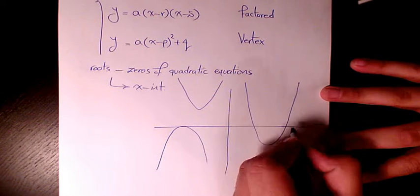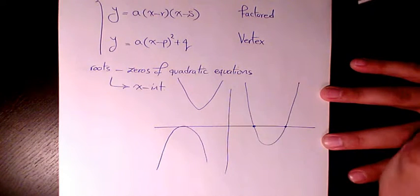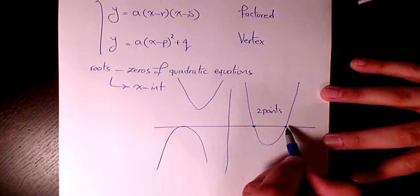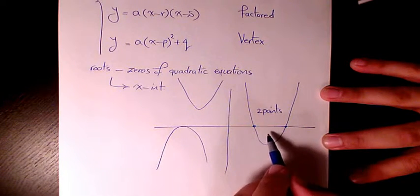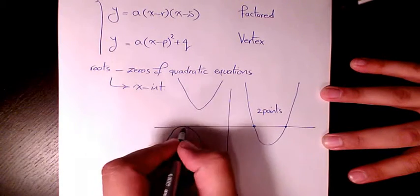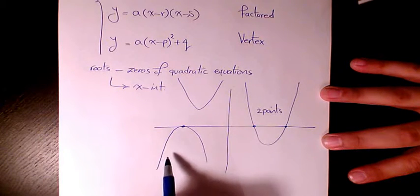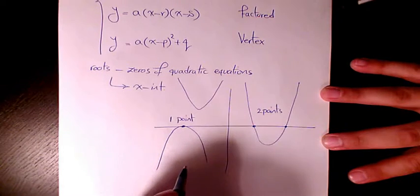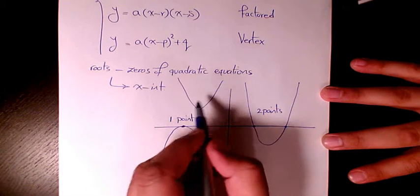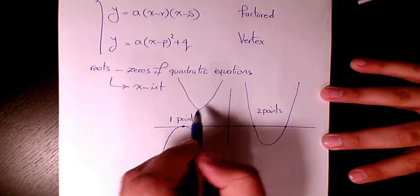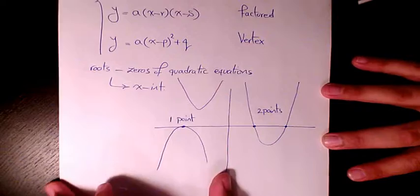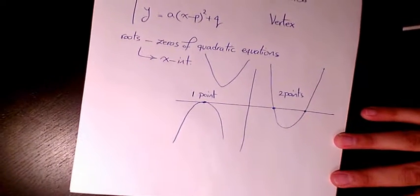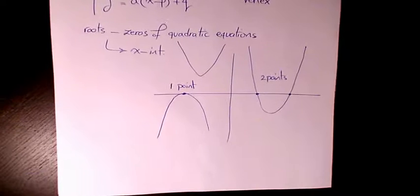We can have three different cases. The first case is when the parabola crosses the x-axis at two points — we say the quadratic equation has two real answers. The second case is when the parabola touches the x-axis at one point, giving one zero or one x-intercept. And sometimes it doesn't touch or cross the x-axis at all, meaning there is no real solution.